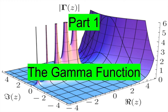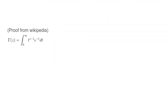The proof I will use is from Wikipedia. The gamma function of z is defined as the integral from 0 to infinity of t to the power of z minus 1 times e to the negative t dt, for any z with real part greater than 0. This converges because of exponential over-kill.